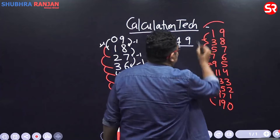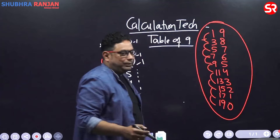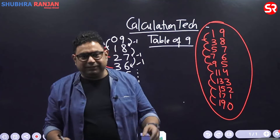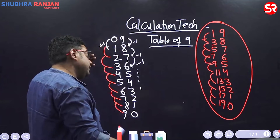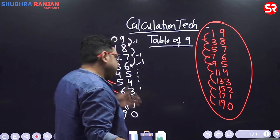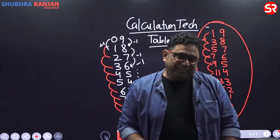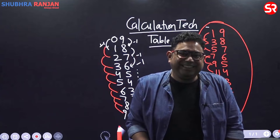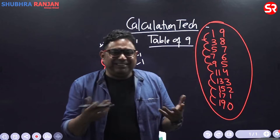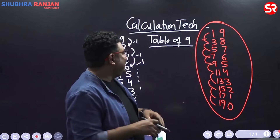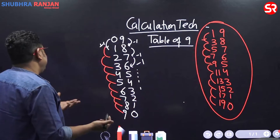From today onwards, 19 won't be a problem: 19, 38, 57, 76, 95, 114, 133, 152, 171, 190. Tables ending in 9 are all like that.